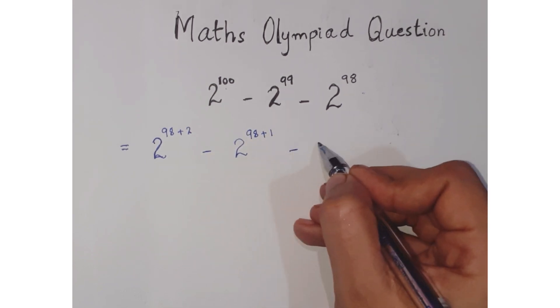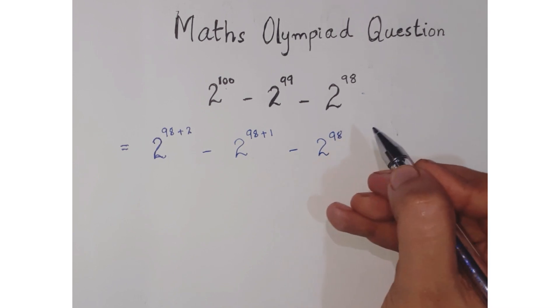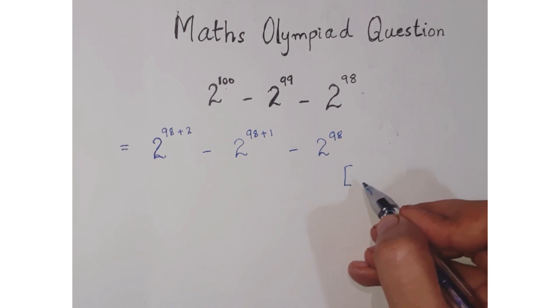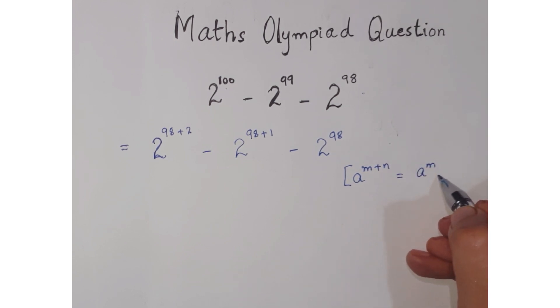Now according to the rule as you all know, when a raised to the power m plus n can be written as a to the power m dot a to the power n.